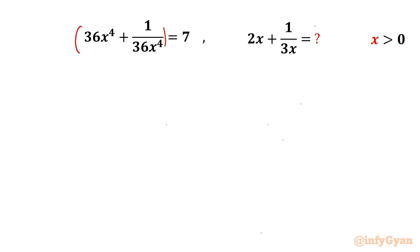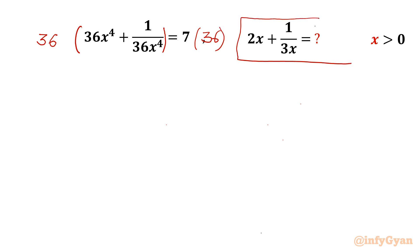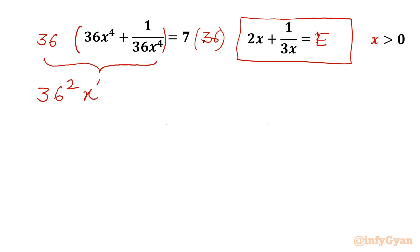I will multiply this equation both sides with 36. Let us call the expression to evaluate E. Now I will multiply the LHS — it will come out as 36 squared times x⁴ plus 36 times 1 over 36 times 1 over x⁴. The right hand side becomes 252.